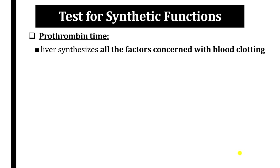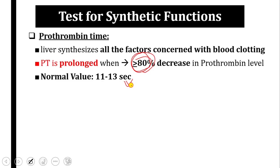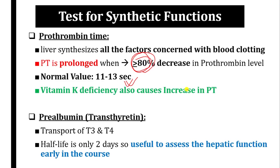Prothrombin time assesses synthetic function: prothrombin is synthesized by the liver like other clotting factors. When liver damage reduces prothrombin by more than 80%, prothrombin time is prolonged. Normal prothrombin time is 11–13 seconds. Vitamin K deficiency also prolongs prothrombin time. Prealbumin (transthyretin), which transports thyroid hormones T3 and T4, has a half-life of only two days — making it useful for early assessment of hepatic function — but it is not a routine test.